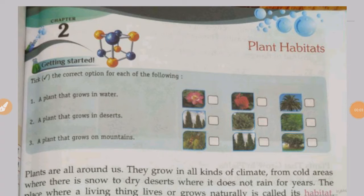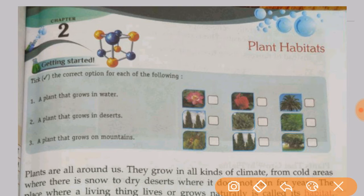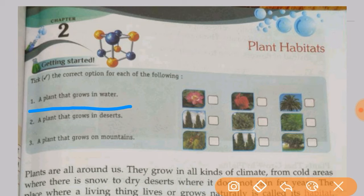Today we will read about plants habitats. Habitat means the place where plants or any animal live or grow naturally. There is a question for you: which plant grows in water? The lotus grows in water.